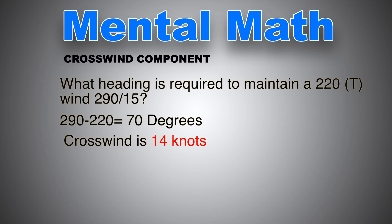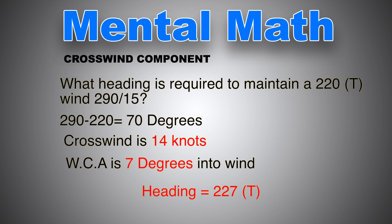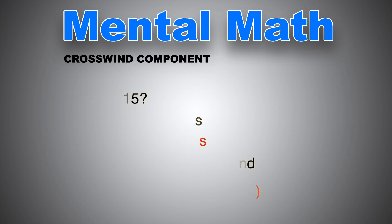So the wind correction angle, as we have said earlier, is half the crosswind component. So half 14 is 7. So the required heading is 220 plus 7, which is 227. Why we added and didn't subtract is that we always correct into wind. So the wind is 290, which is blowing from the right. So if it's from the right, we add and vice versa.